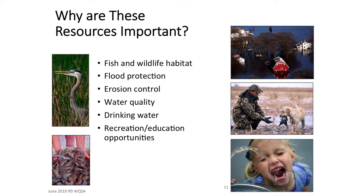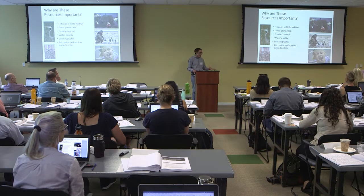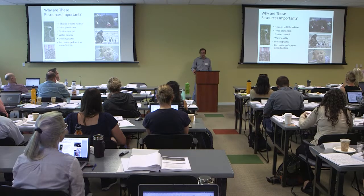Wetlands are also really important for protecting and maintaining water quality. They're kind of giant bio-incubators for processing organic matter and nutrients, and they also sequester a lot of organic carbon. So they can be important for climate change mitigation as well as adaptation. Wetlands improve water quality and are crucial to protecting drinking water. And they're great for recreational and educational opportunities — the Cosumnes River Preserve is a great place to bring kids or school groups to learn about the animals and plants in wetlands.